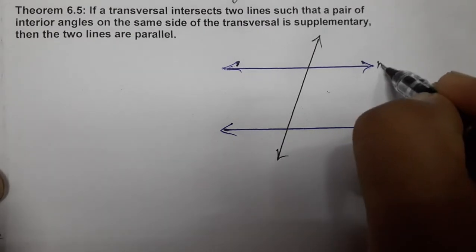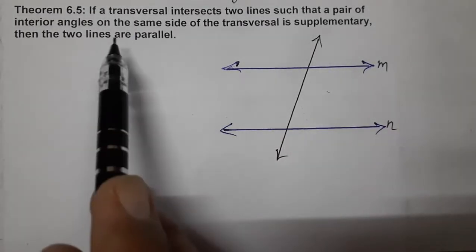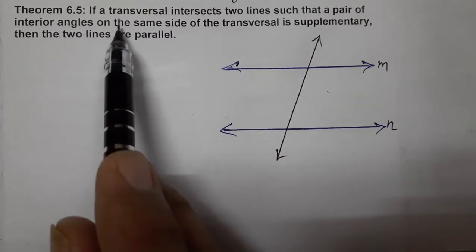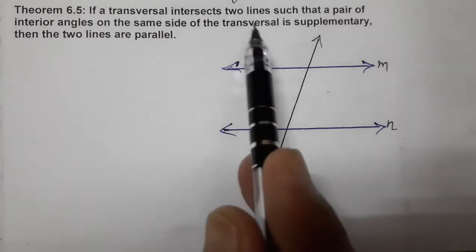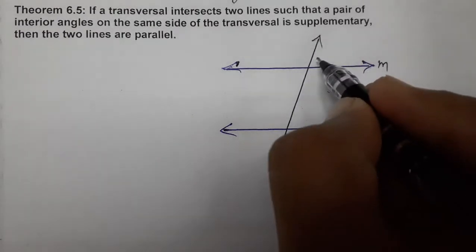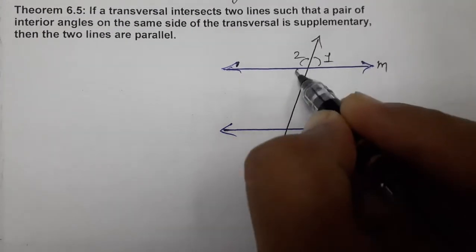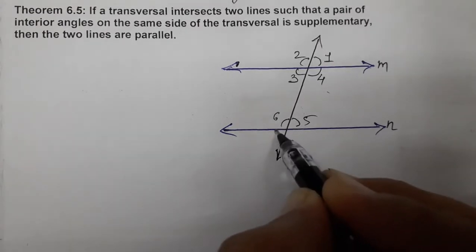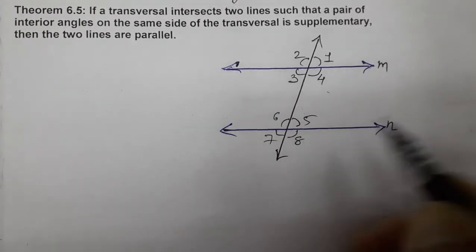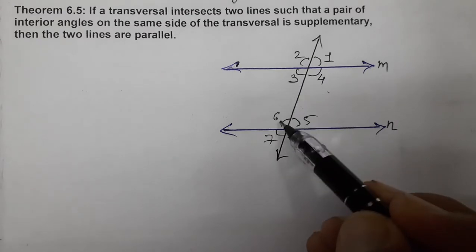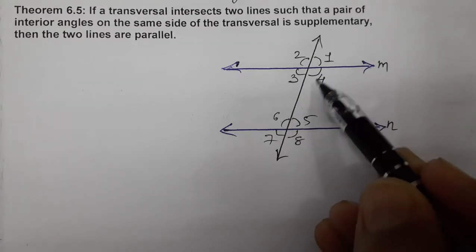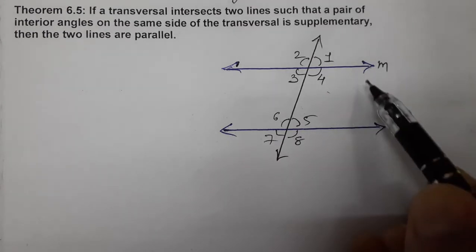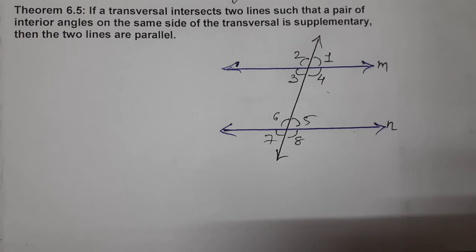So let's name the lines M and N. If a transversal intersects two lines such that a pair of interior angles on the same side of the transversal is supplementary, we can name the angles first: one, two, three, four, five, six, seven, and eight. So let's start with given only.